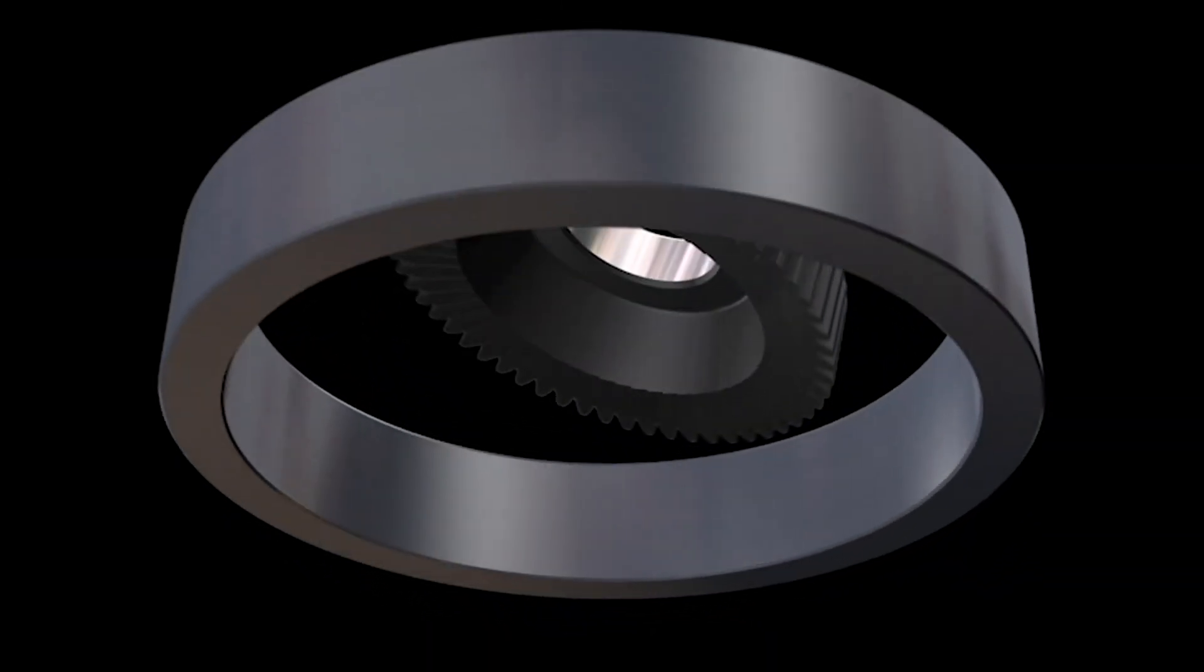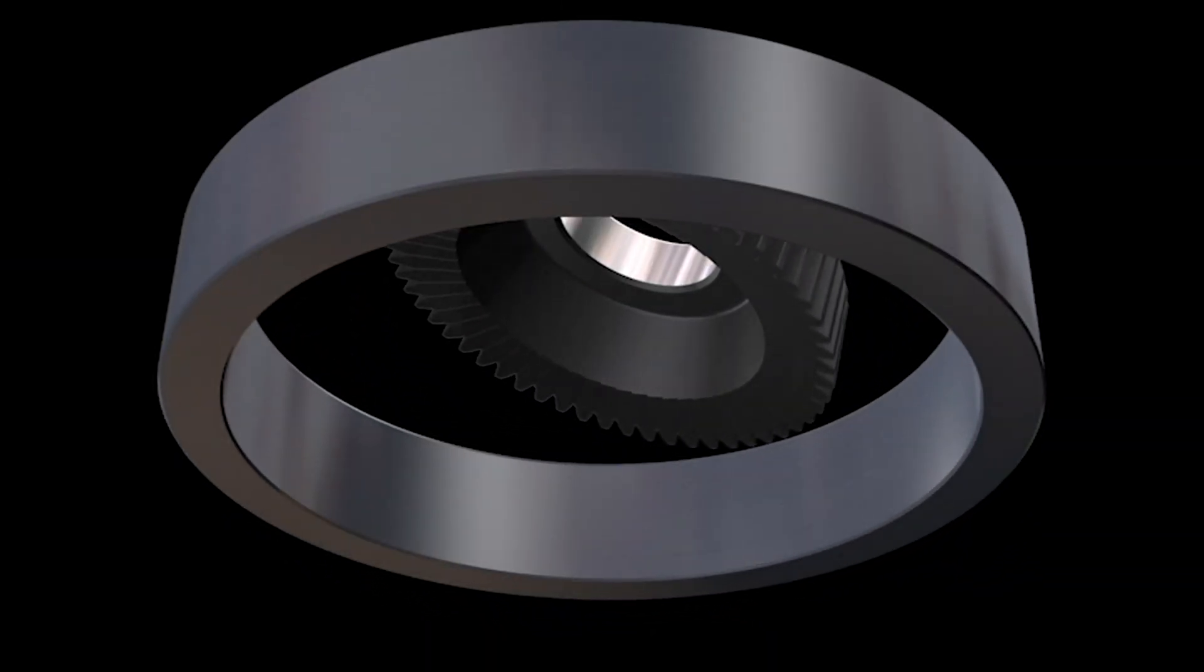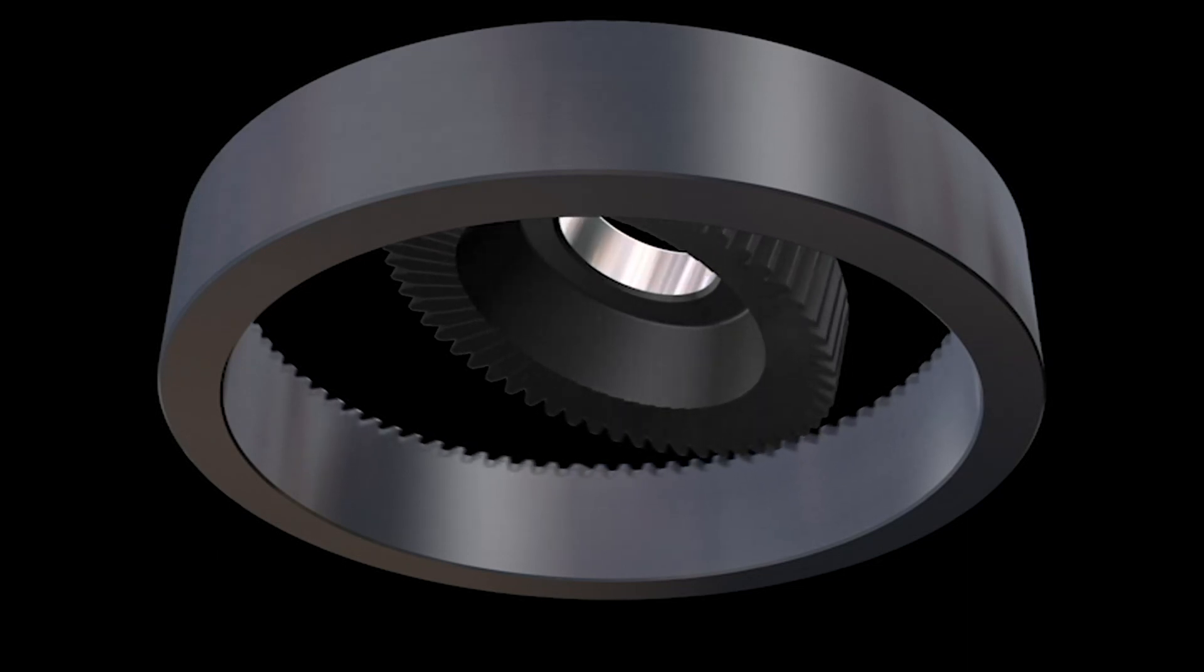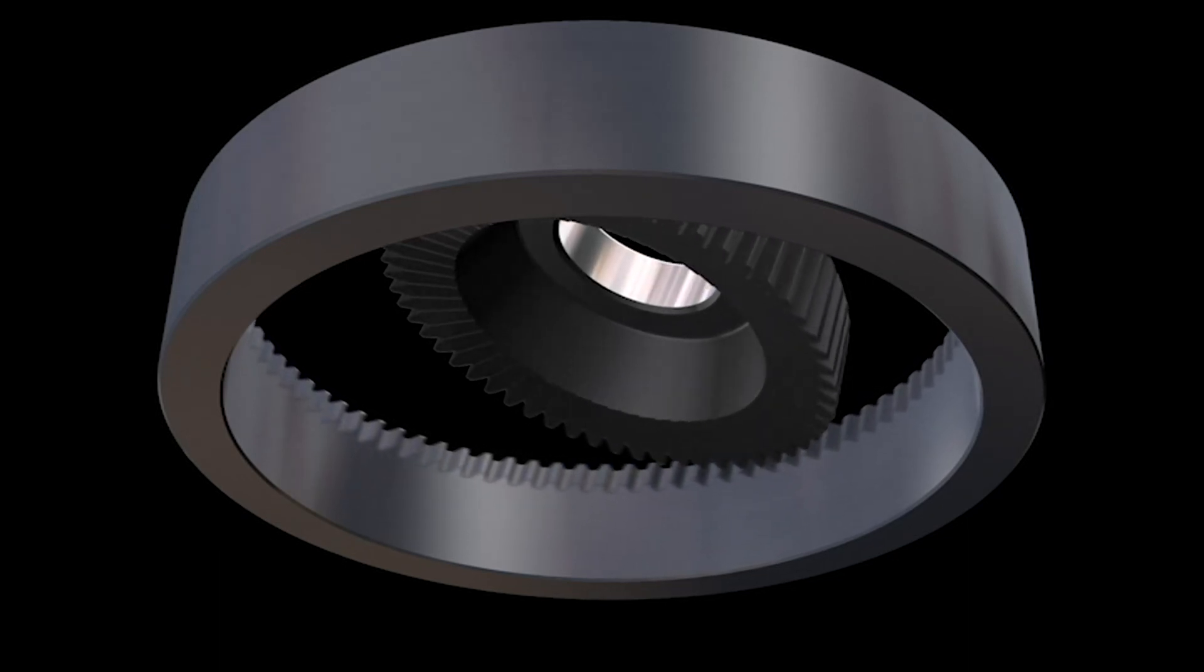Skiving is a gear cutting method that involves the setting of a pinion shaped cutter at a cross-axial angle and then moving it along the axis of the workpiece.